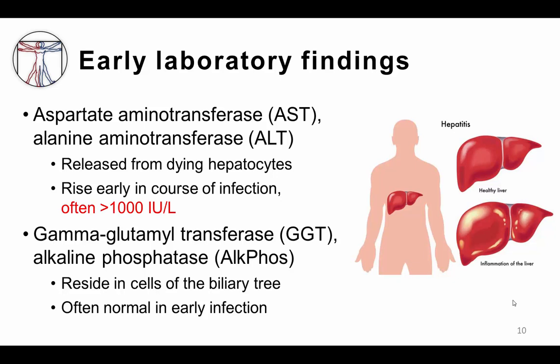If labs are obtained, they will typically show several abnormalities in the patient's liver function tests. Aspartate aminotransferase, also known as AST, and alanine aminotransferase, or ALT, are enzymes that reside inside hepatocytes and are released when viral infection and inflammatory responses lead to liver cell death. The levels of AST and ALT can be very elevated in the early stages of viral hepatitis infection, often to greater than a thousand, where normal is in the twenties to forties range.